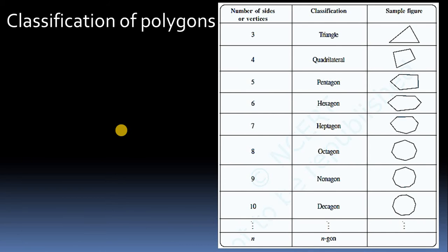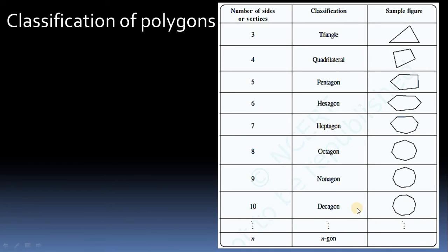Classification of polygons by number of sides and vertices: triangle has three sides, quadrilateral has four sides, pentagon has five sides, hexagon has six sides, heptagon has seven sides (rarely used), octagon has eight sides, nonagon has nine sides (rarely used), and decagon has ten sides — up to n sides. Most commonly used are triangle, quadrilateral, and hexagon.